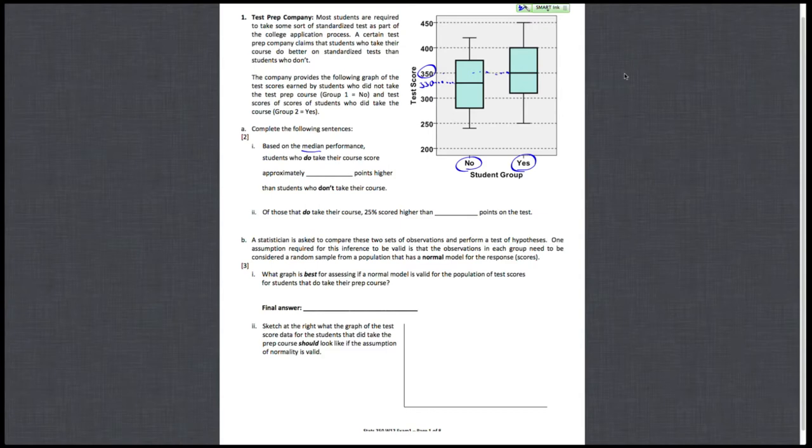Based on the median performance, those who do take the course seem to score approximately how many points higher than those who did not take their course. So 350 compared to 330, I'm going to estimate that to be about 20 points higher.